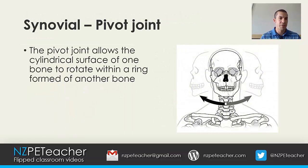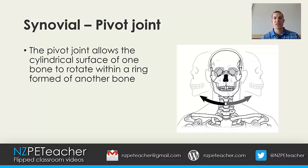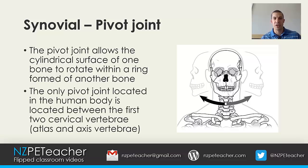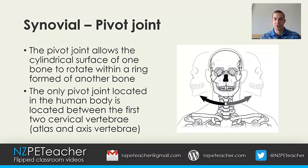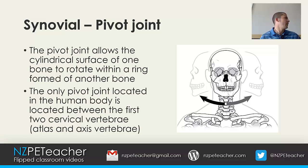The pivot joint allows the cylindrical surface of one bone to rotate within a ring formed by another bone. The only pivot joint in the human body is located between the first two cervical vertebrae, known as the atlas and the axis. This joint allows you to pivot your head and turn it from left to right.